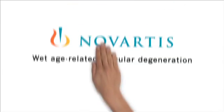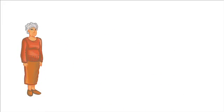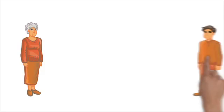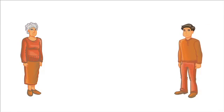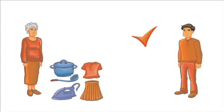We explain wet age-related macular degeneration. Meet Sue. Sue is in her 70s. Now meet Fred. He's Sue's son and primary caregiver and is responsible for helping Sue carry out most of her day-to-day activities and her general well-being.